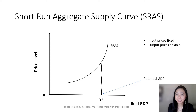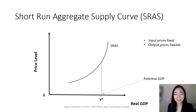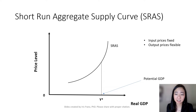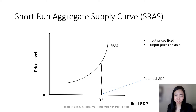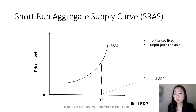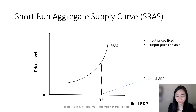Here is our short run aggregate supply curve. Notice that it is positively sloped, telling you that there is a direct relationship between price level and real GDP. Why is that? Because in the short run, input prices are fixed, but output prices are flexible.